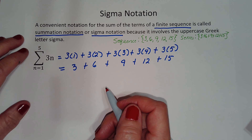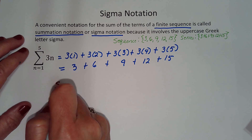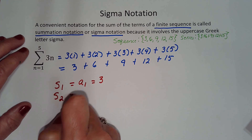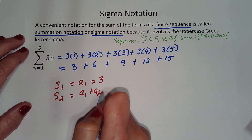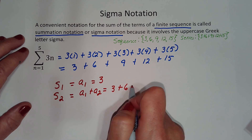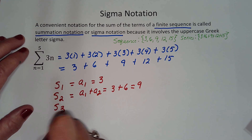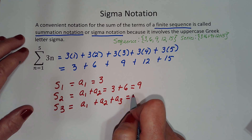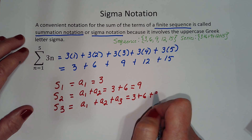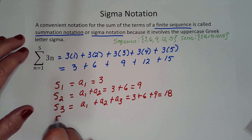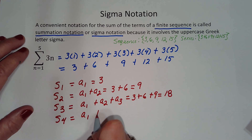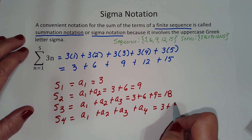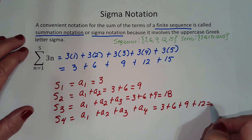Now let's find the first 4 partial sums of the sequence. S sub 1 equals A sub 1, which equals 3. S sub 2 equals A sub 1 plus A sub 2, which equals 3 plus 6, which is 9. S sub 3 equals A sub 1 plus A sub 2 plus A sub 3, which equals 3 plus 6 plus 9, which is 18. S sub 4 equals A sub 1 plus A sub 2 plus A sub 3 plus A sub 4, which is 3 plus 6 plus 9 plus 12, equal to 30.